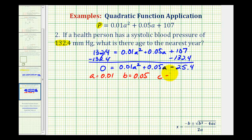And C is equal to the constant term of negative 25.4. Now using the quadratic formula given here below, we will have X equals negative B or negative 0.05 plus or minus the square root of B squared minus 4 times A times C, all over 2 times A, which would be 2 times 0.01.